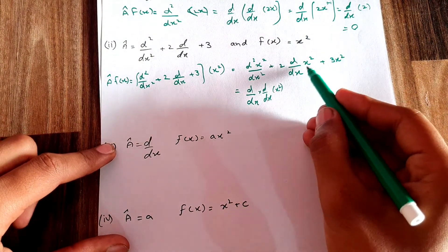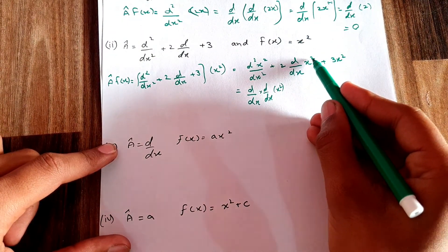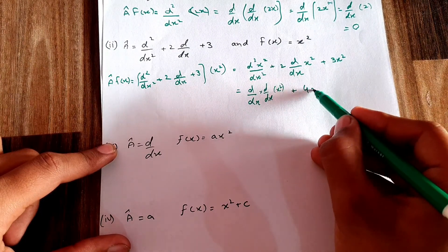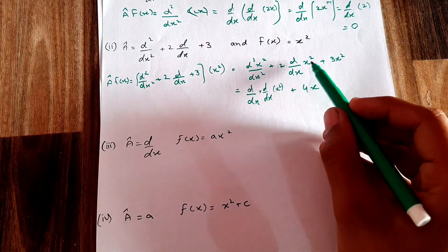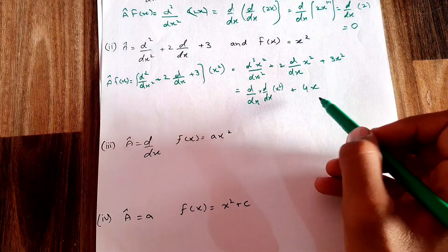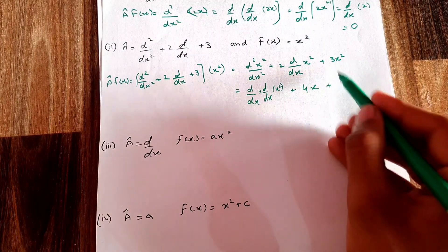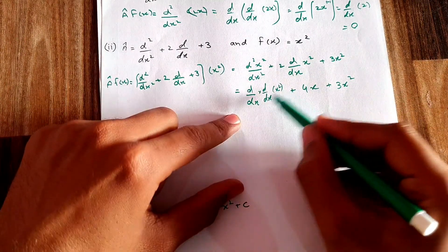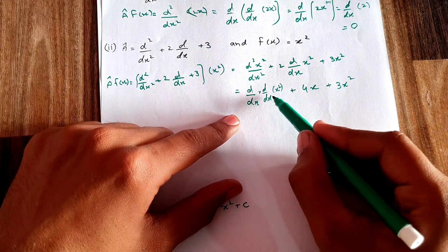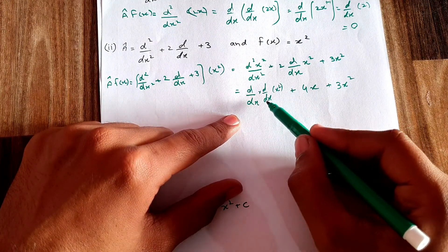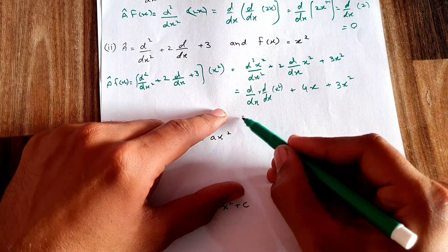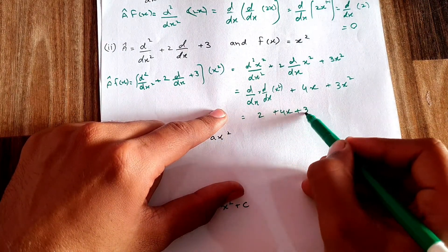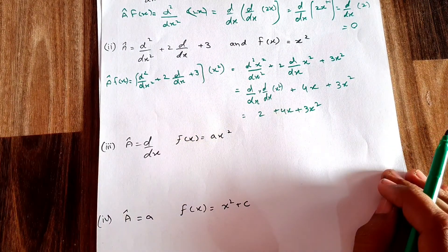Applying the derivatives: for d²(x²)/dx², the first derivative of x² gives 2x, and the second derivative gives 2. For 2·d(x²)/dx, the derivative of x² is 2x, so this term gives 4x. The 3x² term remains as is. This is how the full derivative is applied.